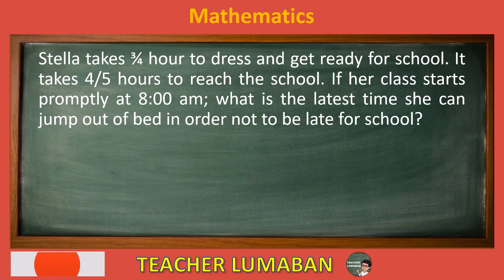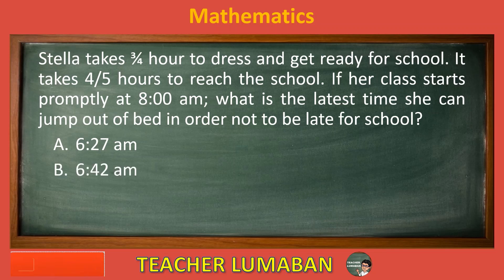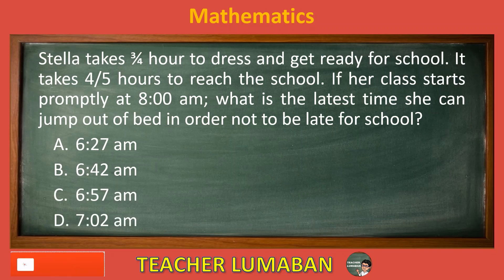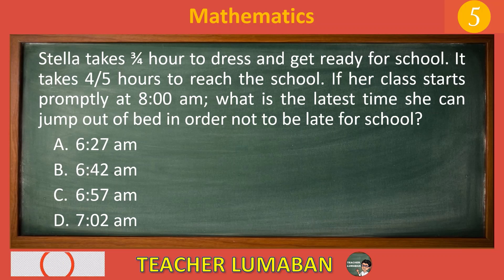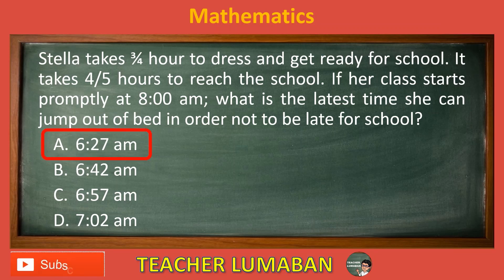It takes 4/5 hours to reach the school. If her class starts promptly at 8 a.m., what is the latest time she can jump out of bed in order not to be late for school? Letter A: 6:27 a.m. Letter B: 6:42 a.m. Letter C: 6:57 a.m. Letter D: 7:02 a.m. Choose the suitable answer based on the given choices in 5 seconds. The correct answer is Letter A: 6:27 a.m.